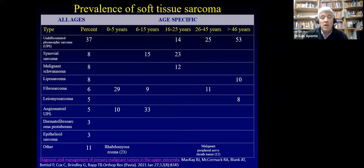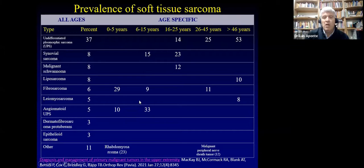Now we finish with bone sarcomas and move to soft tissue sarcomas. Looking at age distribution, UPS predominates at all ages, particularly over 16 years. Younger patients have synovial sarcoma or malignant peripheral nerve sheath tumor. Fibrosarcoma appears in young and older patients. Rhabdomyosarcoma is mainly in younger patients.